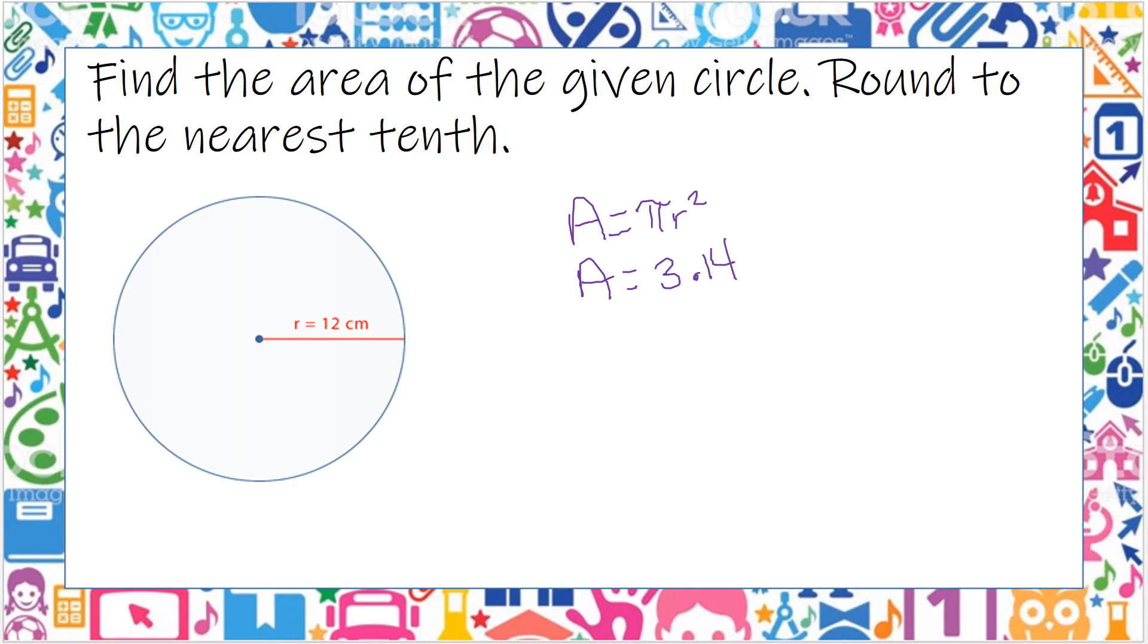If they ask you for an exact number, you're going to leave it as pi. But since it says round to the nearest tenth, we're going to put 3.14 times my radius squared. So I'm going to use my calculator there to do 3.14 times 12 squared, or 12 times 12.